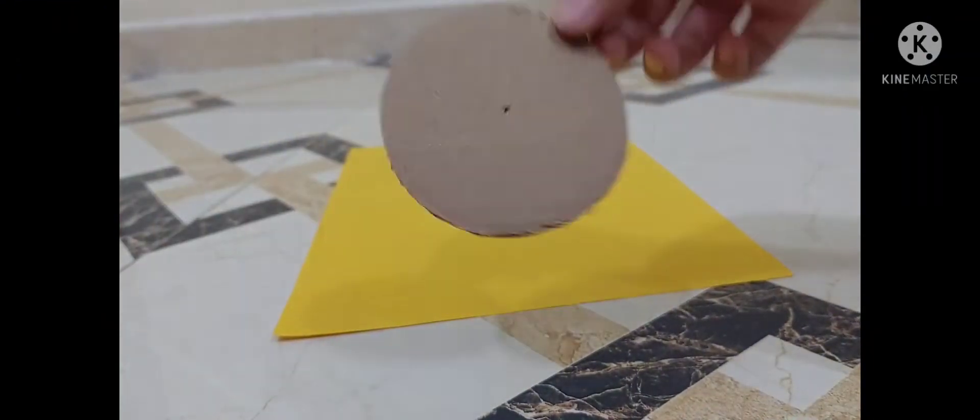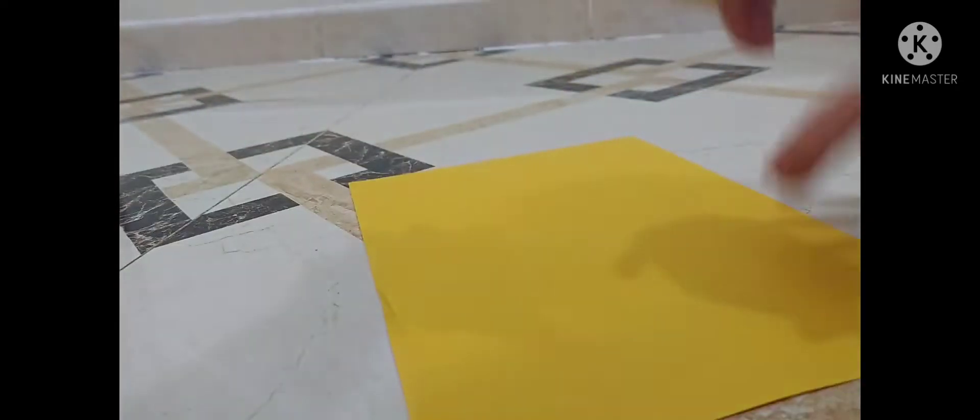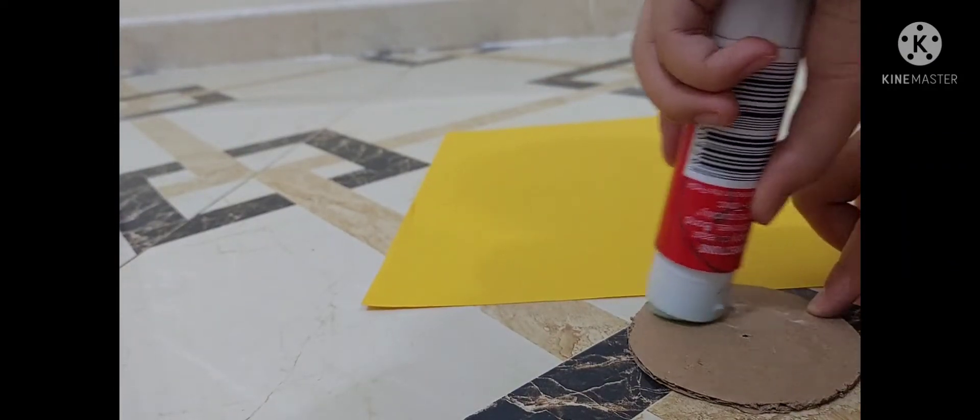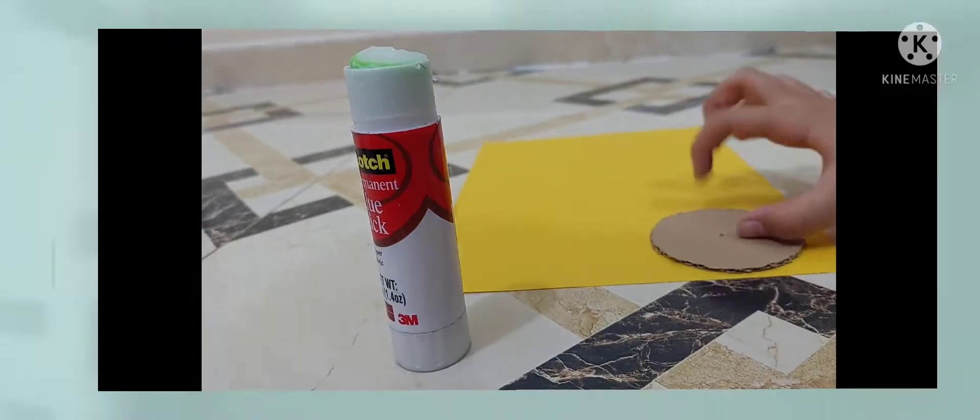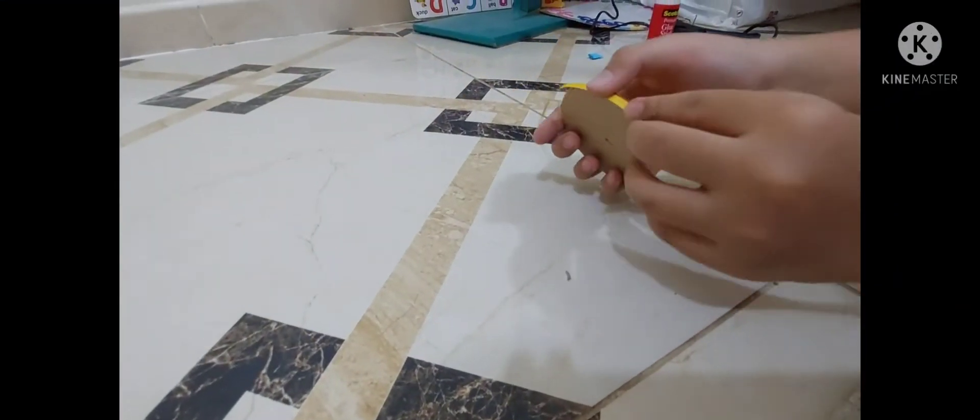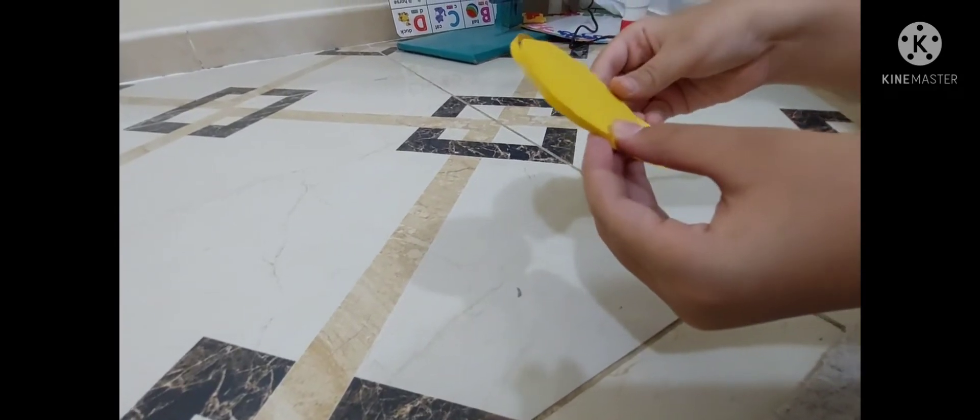So after that we're gonna cut it to look like this. After that we're gonna put the string and draw again at the edge of the cardboard.